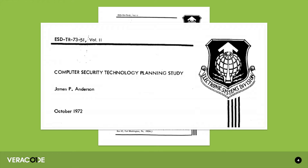Anderson pulled together a team of people from academia, industry, and government. They spent six months together and came up with a 140-page report called the Computer Security Technology Planning Study. You could argue that this study defined the direction of computer security research for the next decade at least, maybe longer. They predicted a lot of attack vectors very accurately before software was being produced at large scale. The reason I like this paper is because it presents one of the very first technical descriptions — if not the first — of a buffer overflow.